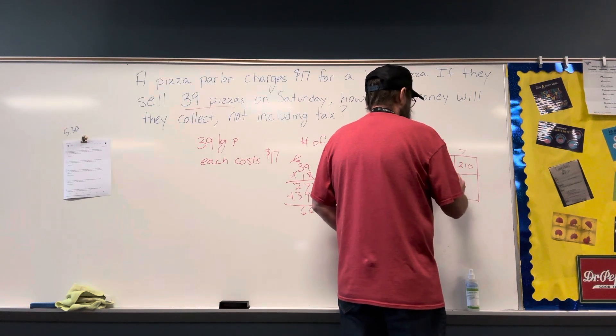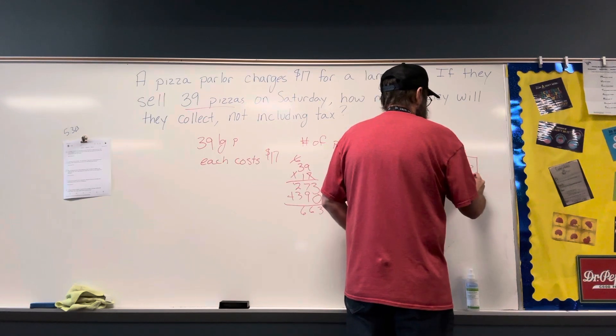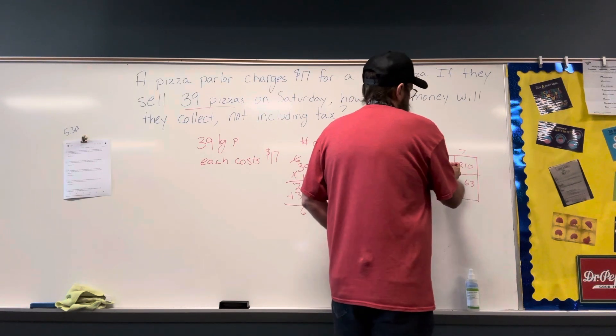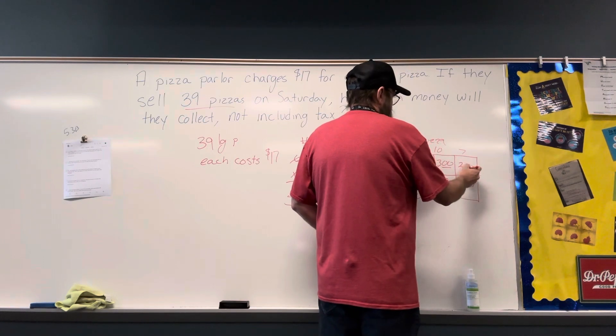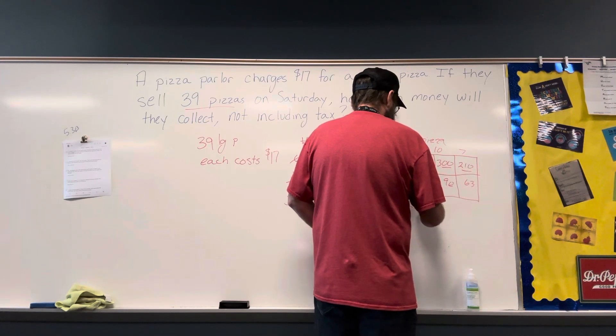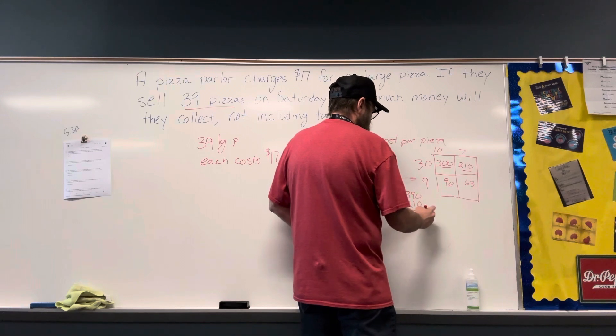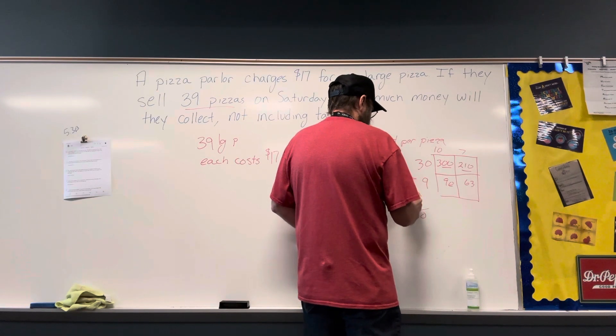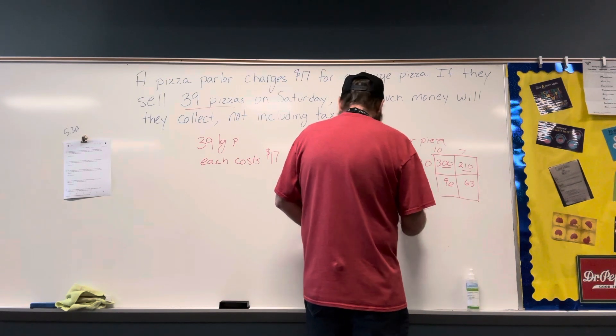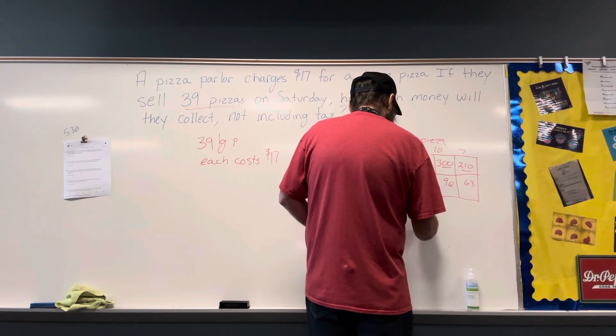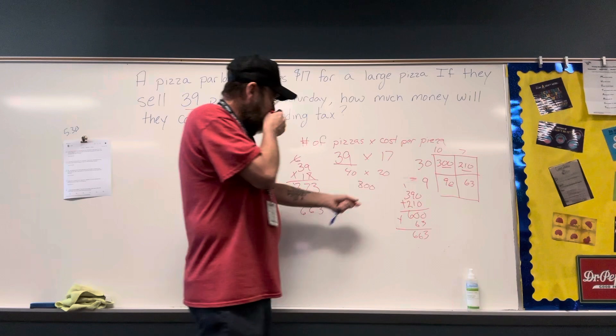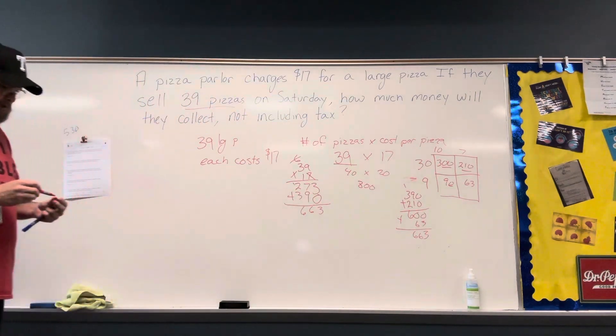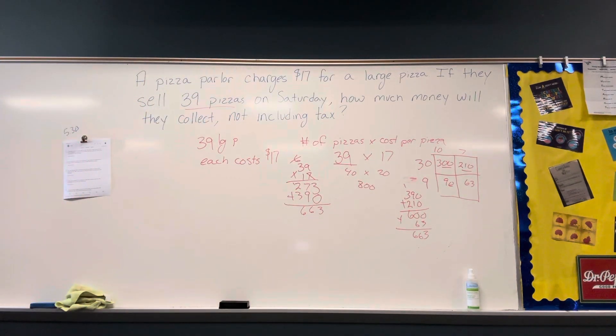9 times 10 is 90, 9 times 7 is 63, so 390 plus 210 gives me 600 plus 63 is 663.